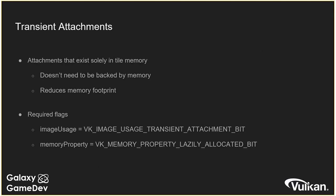Transient attachments are a really mobile-specific feature designed for attachments that are never written out to memory. Since they're not written to memory, you don't need memory reserved for them, so you can make them transient to save space. This goes hand in hand with subpasses — for example, in deferred rendering the G-buffers can be kept entirely in tile memory and never written out at all. Even outside of subpasses it's useful for depth attachments, which often don't need to be written out either.